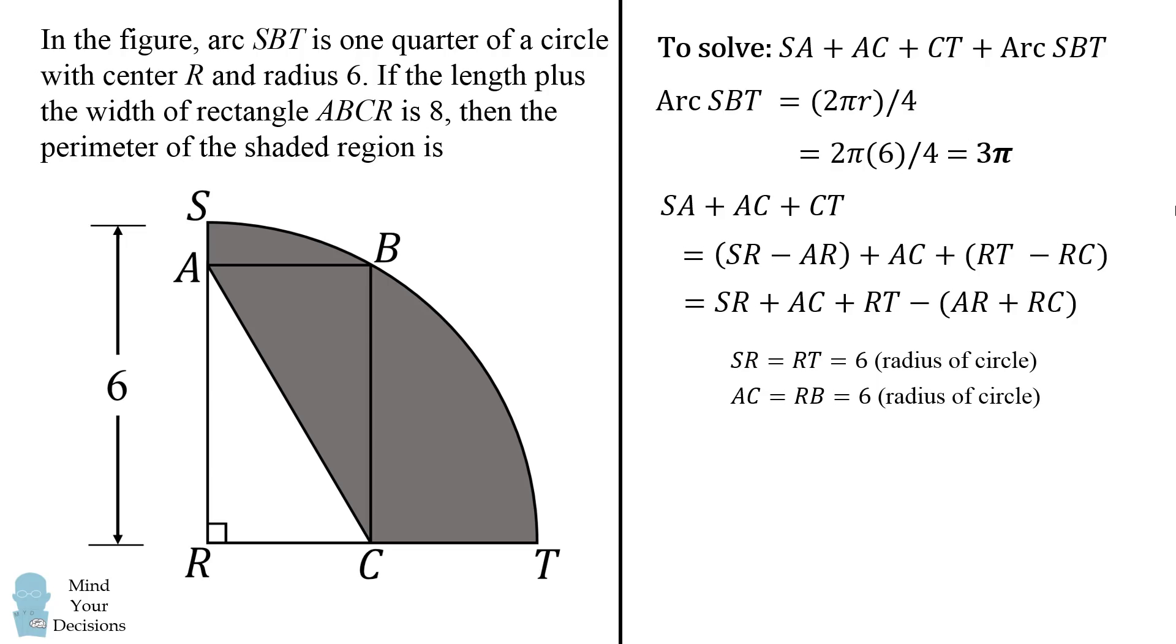Finally, we have AR plus RC. This is given to us in the problem as the length plus width of the rectangle, which is equal to 8. So we now know each of these quantities, so we get 6 plus 6 plus 6 minus 8, and this simplifies to be 10.